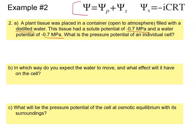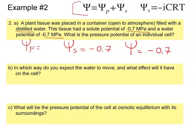We apply the formula to find the pressure potential. We know the solute potential is negative 0.7 and the water potential is also negative 0.7. Since we know both of those values, we can solve for pressure potential, and the answer is zero — there is zero pressure potential in the individual cell.